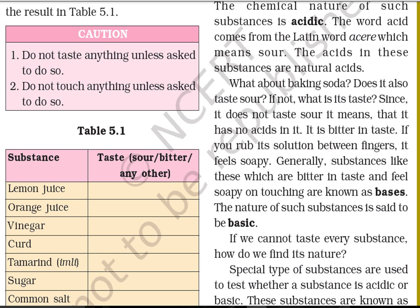Common salt is a salt. Under that, amla, baking soda, grapes, and unripe mango are given. Among those, amla is acidic in nature, baking soda is basic in nature, and grapes and unripe mango are acidic in nature. In the table, we distribute the substances into the categories of acid, base, and salts or neutral compounds. I hope you now understand what is meant by acid and what is meant by base.